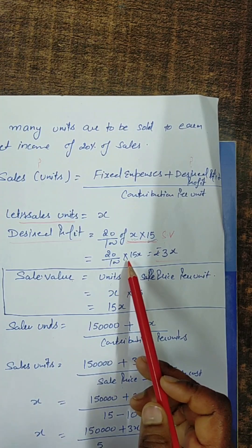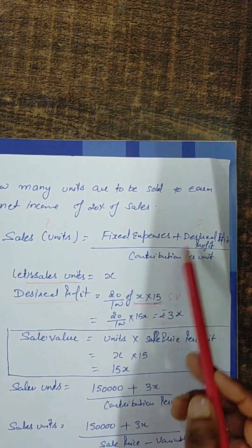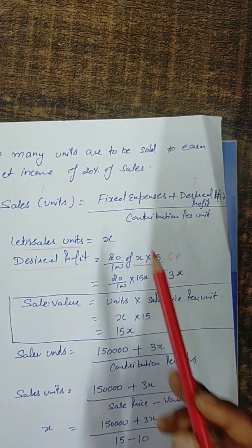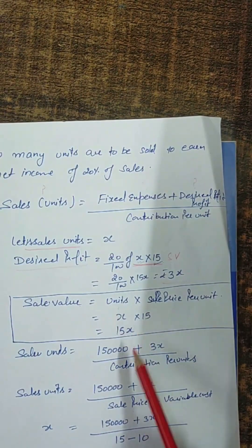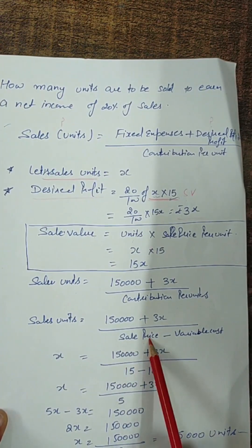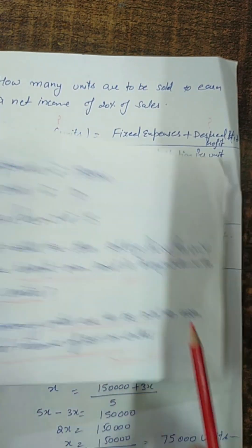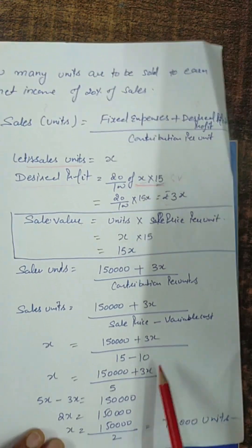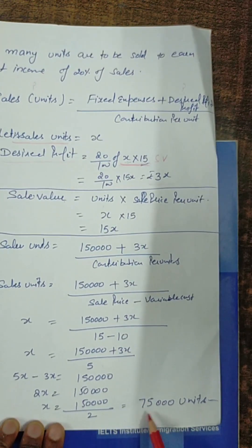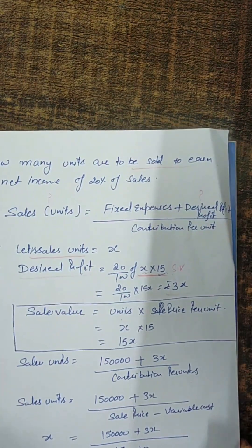Desired profit is 3x, and variable cost per unit is ₹10. Now using the formula and cross-multiplying to solve, the answer comes out to 75,000 units. So 75,000 units must be sold to earn a net income of 20% on sale. That's all, thank you.